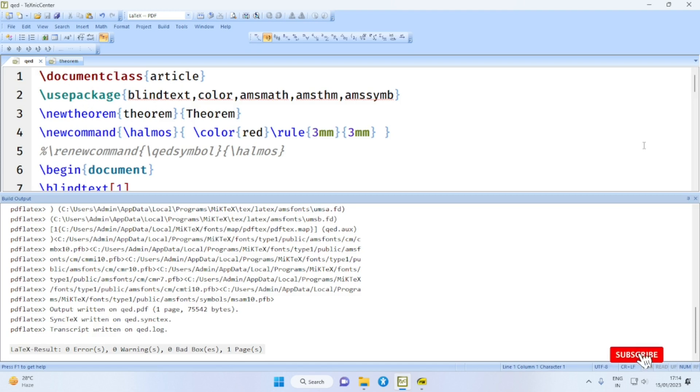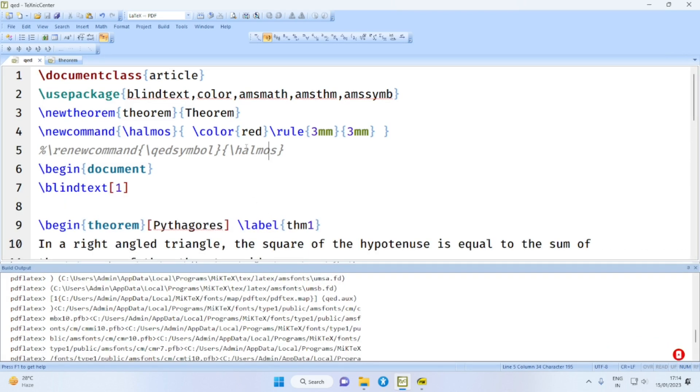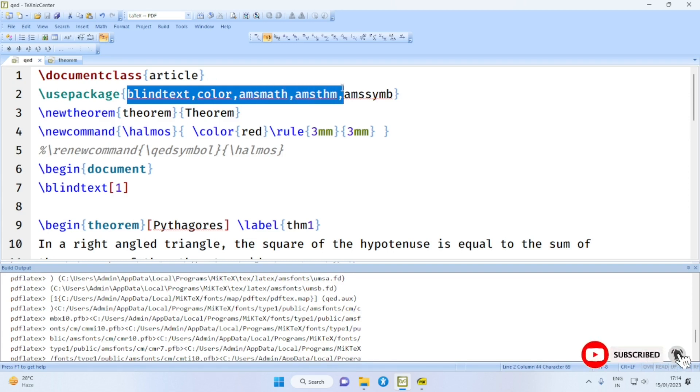For this purpose we use TeXnic Center and a simple file like this. Here we use the packages blindtext, color, AMSmath, AMStheorem, AMSsymbol, etc.